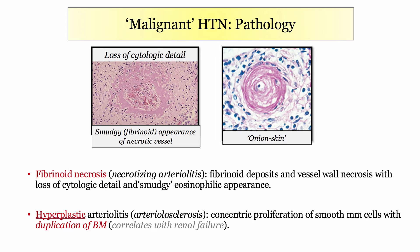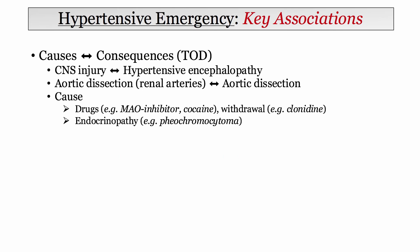The onion skin finding correlates with the presence of renal failure. Moving on to key clinical associations — you will see the double-headed arrow between cause and consequence. CNS injury can precipitate a hypertensive emergency, but a hypertensive emergency can also manifest or cause CNS injury.